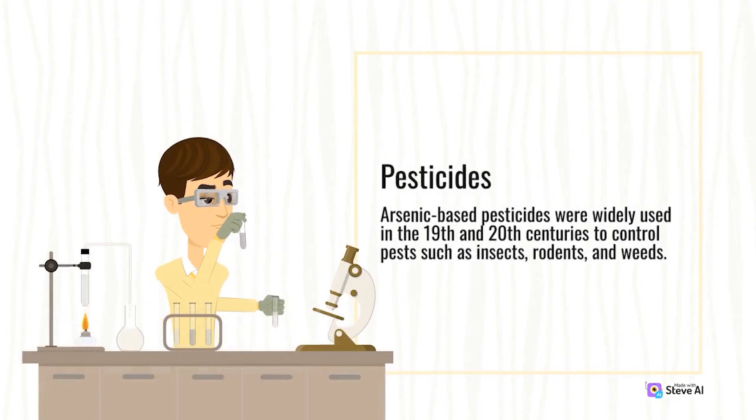Arsenic-based pesticides were widely used in the 19th and 20th centuries to control pests such as insects, rodents, and weeds.